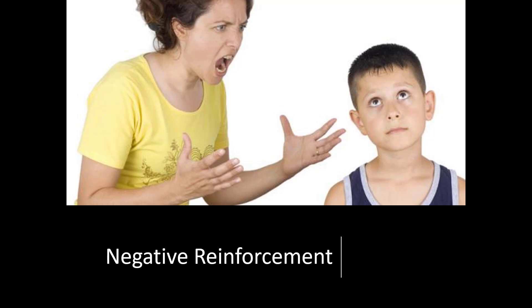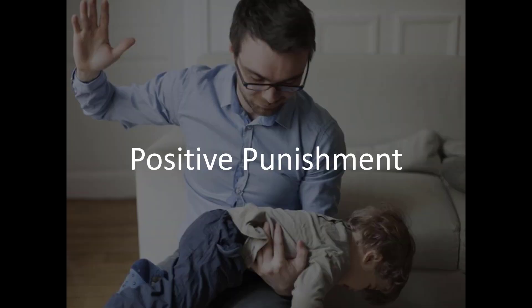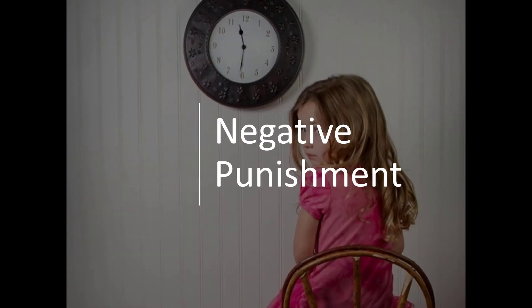Positive punishment does not mean something good. Positive punishment means simply adding something to the environment that is going to be punishing — something that decreases the likelihood of a behavior. For example, spanking is a form of positive punishment; we're adding something to the environment that decreases the behavior. Negative punishment, by contrast, is removing something from the environment that is desirable. This might be a timeout, taking the phone away if a child doesn't come home on time, losing the car for bad grades, or losing a paycheck for not showing up to work on time. We are punishing the behavior by removing something desirable.